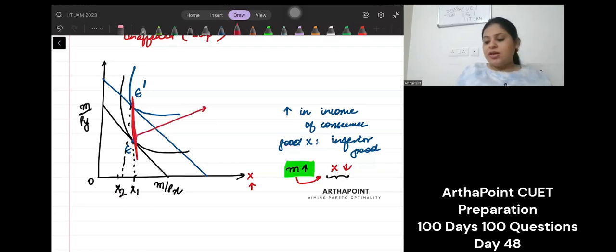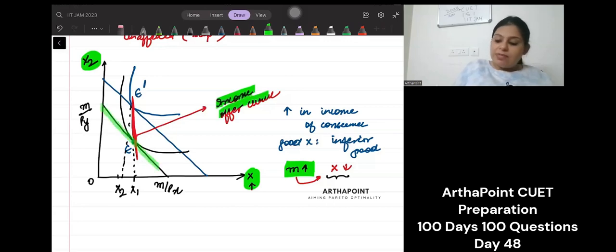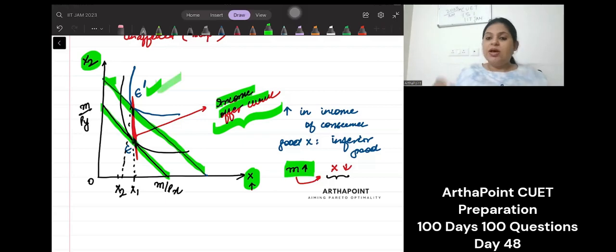If I join these two equilibrium points together, this is called income offer curve. Income offer curve is shown when on both the axes you have goods. We are showing the effect of income through shift of the budget line. And when my budget line is shifting, then the demand of good X is decreasing. That is my income offer curve. It is locus of all points of equilibrium. We were also in tangency condition. In both cases we were at equilibrium.